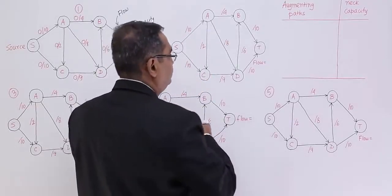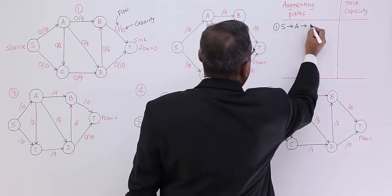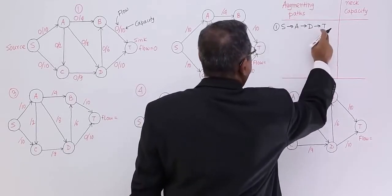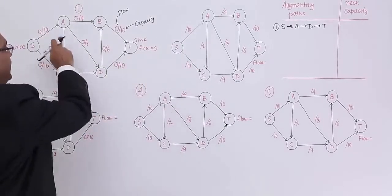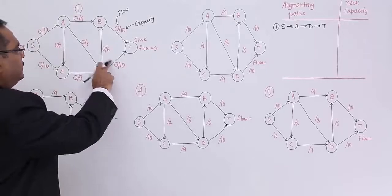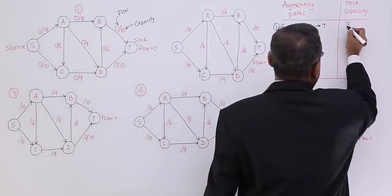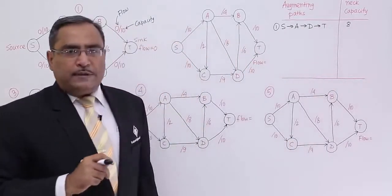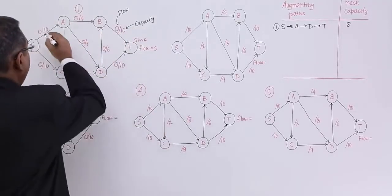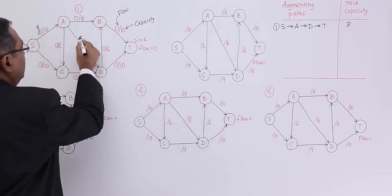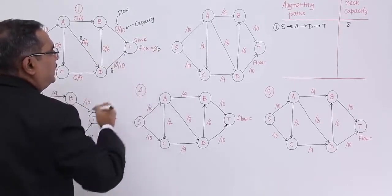Path number 1 is s→a→d→t, source to sink. Here the capacities are 10, 8, and 10. So the bottleneck capacity will be 8. Now let me add this flow to this path — it will become 8, 8, 8 and the flow will become 8.